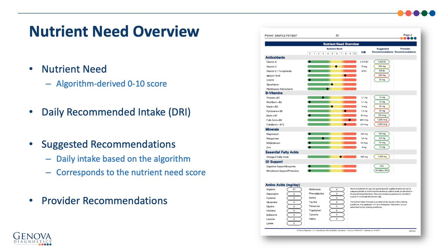To the right of the nutrient need score is listed the daily recommended intake for reference. Suggested recommendations are based on the nutrient need score and can serve as a guide for patient education and intervention. Both the daily recommended intake and the suggested recommendations are adjusted for age and gender. Finally, the last column is left blank for provider recommendations, where the clinician can take into account various aspects of the patient's clinical presentation to make a therapeutic recommendation.